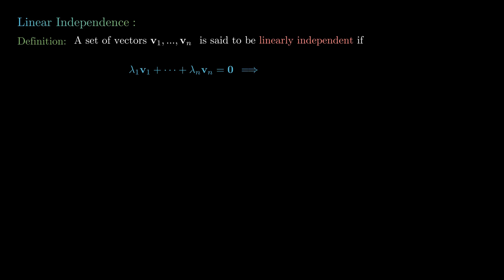A way to understand linear independence is that it reflects new linear information. If I took two vectors which are scalar multiples of each other, they wouldn't have any new information from the point of view of a vector space. But if I took two vectors which were orthogonal or perpendicular, then they would have two separate pieces of linear information — they would be linearly independent.